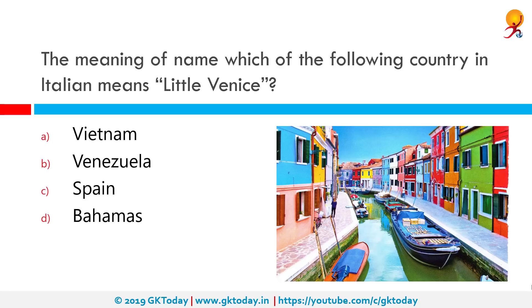The meaning of the name of which of the following countries is Italian and means little Venice? Correct answer is Venezuela.